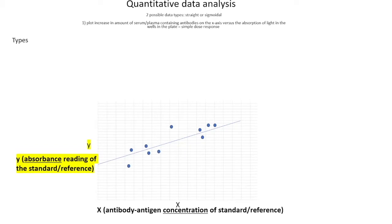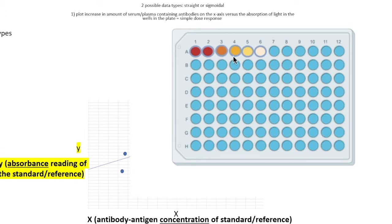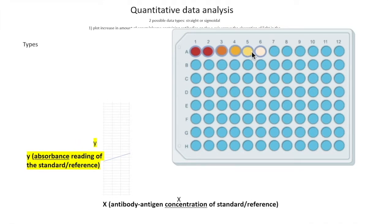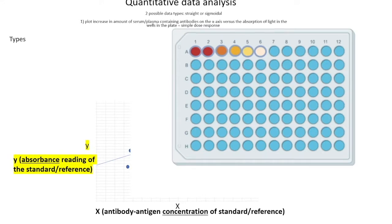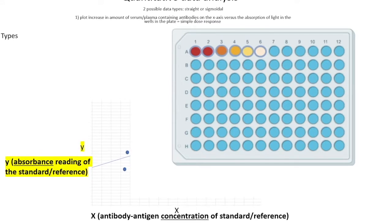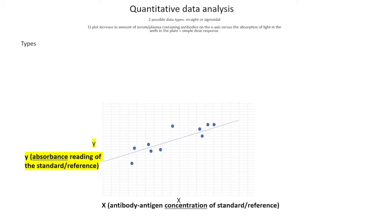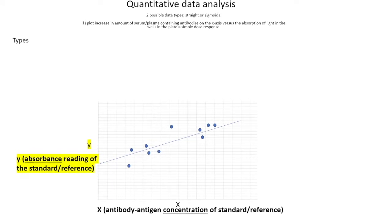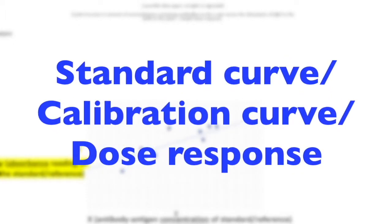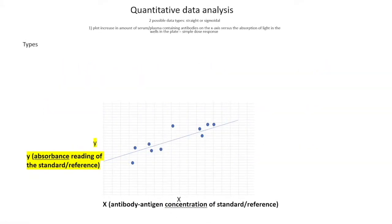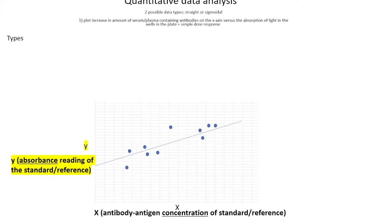In this scenario you would need a standard curve. You take a known amount of the antibody or antigen you're trying to detect and perform serial dilutions — I have a video on how to do serial dilutions, which is a critical technique for bioscientists. The serial dilution allows you to incrementally determine how much protein is in each well, acting as a standard curve — a reference point for all the samples where you don't know the concentration.